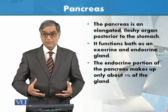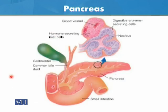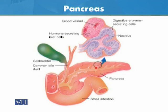This is the location. In this diagram, we can see the pancreas, which I am encircling. This is the small intestine. There is a gallbladder and a common bile duct, which are related to the digestion process. This magnified part shows the digestive enzymes and secretions — this is all about the exocrine portion.